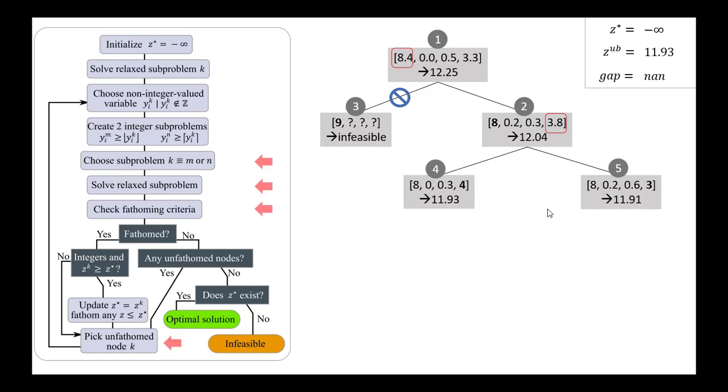And we end up with solutions of 11.93 and 11.91. And both of these are feasible solutions. So we need to review our fathoming criteria, and we note neither of these can be fathomed. They both have feasible solutions. They all have values that aren't integer as part of the variables in the solution. And so we just have to continue on.